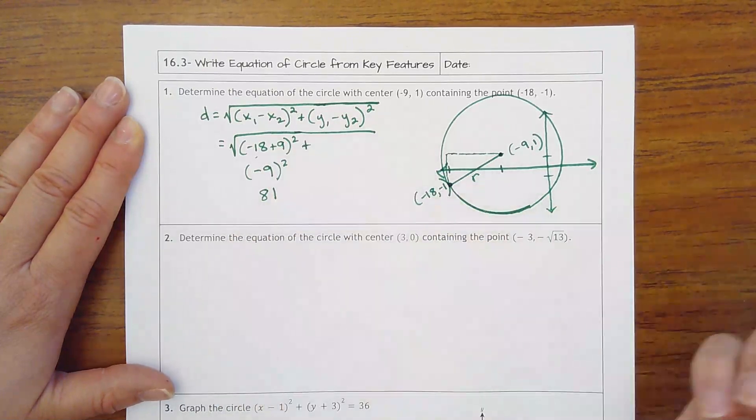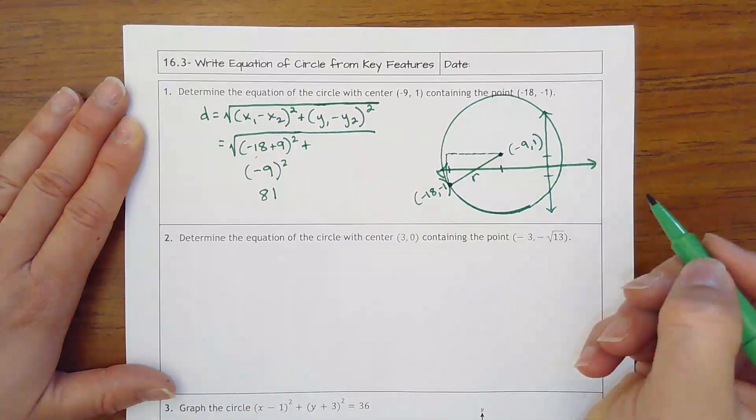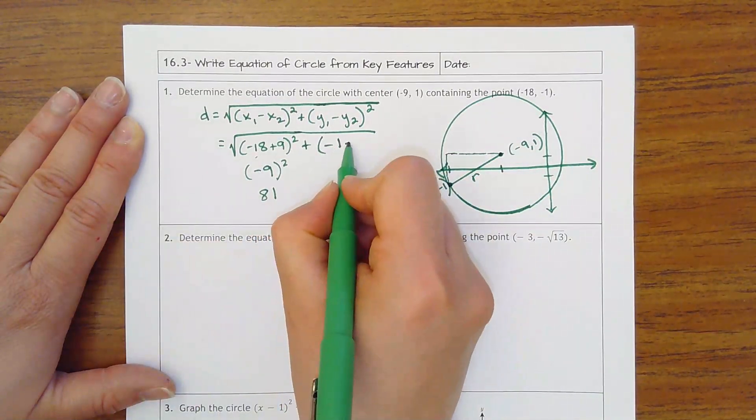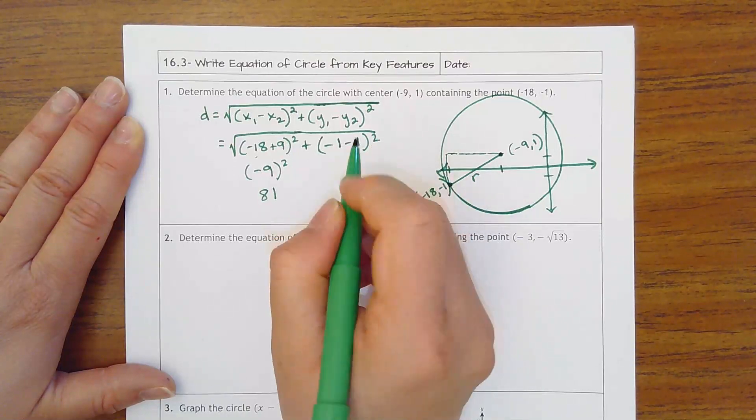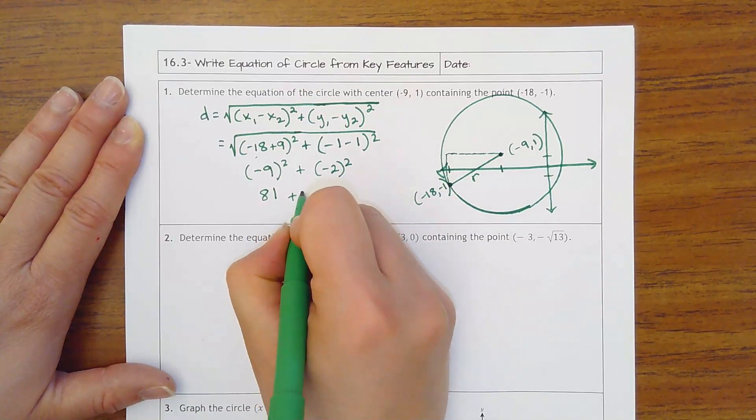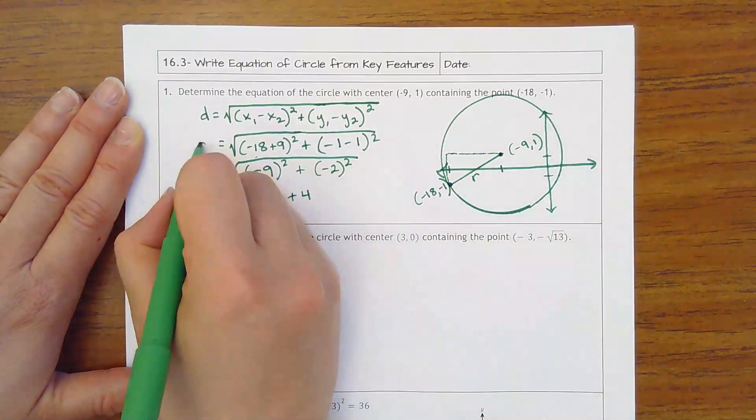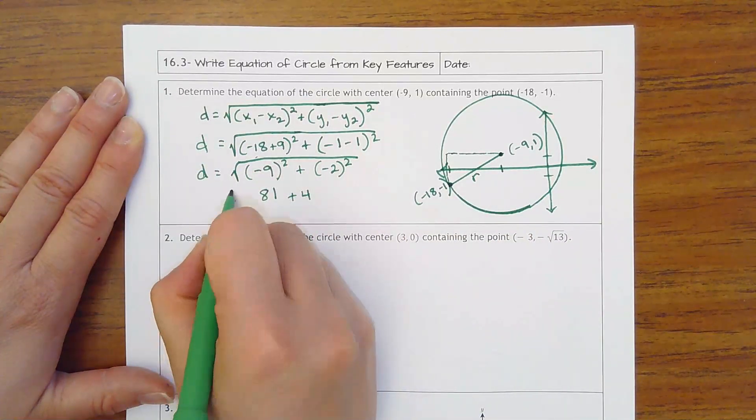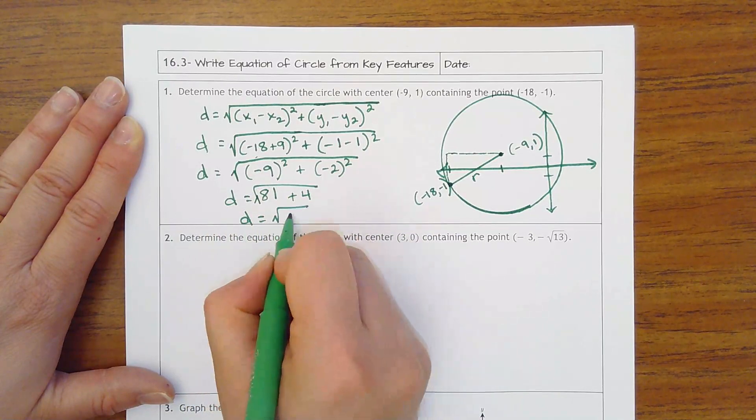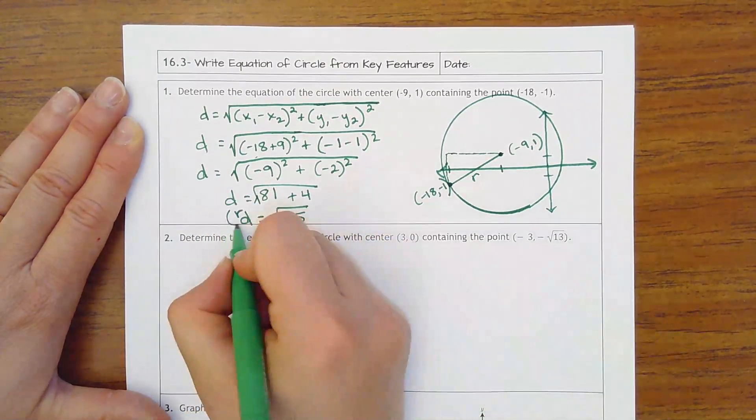And then do the same thing for your y's, which is subtracting the height. So from negative 1 to 1 should be a distance of 2, but you could do negative 1 minus 1, that's negative 2, squared will become positive 4. And then since we have Pythagorean theorem we know that we're square rooting. So that would be square root of 85, and that distance is really our radius.